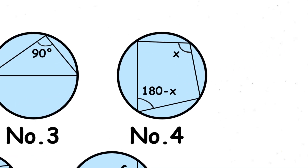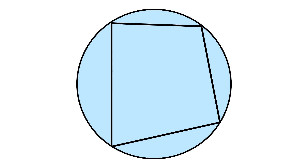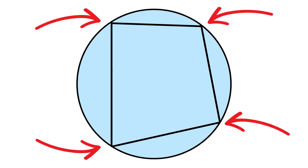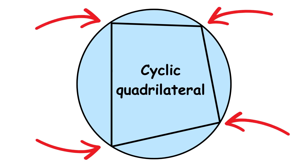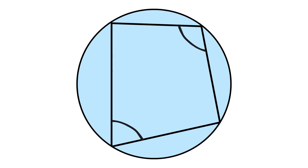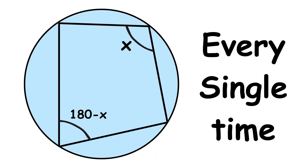The fourth circle theorem is the cyclic quadrilateral theorem. A quadrilateral where all four corners touch the circle is called a cyclic quadrilateral. The opposite angles always add up to 180 degrees. Draw one and check with a protractor — it works every single time.